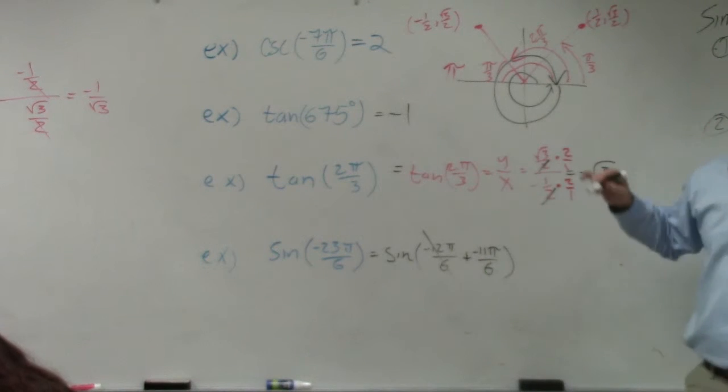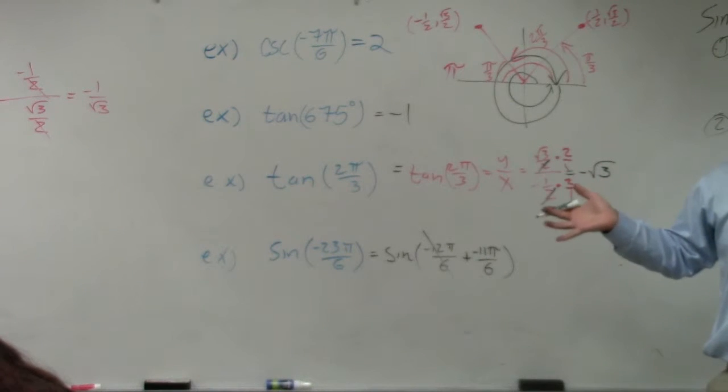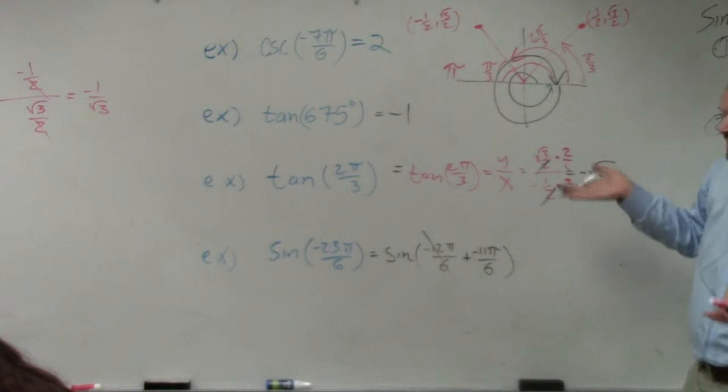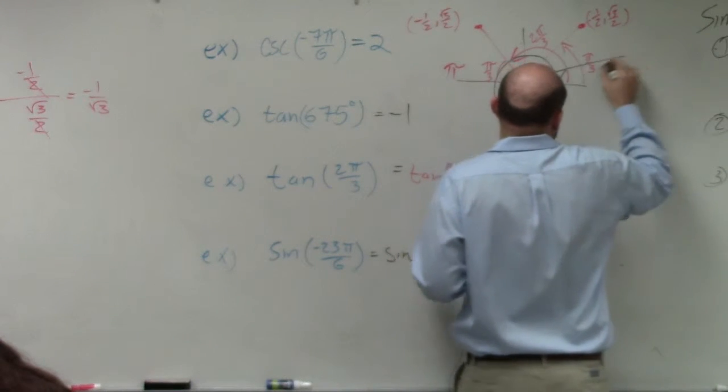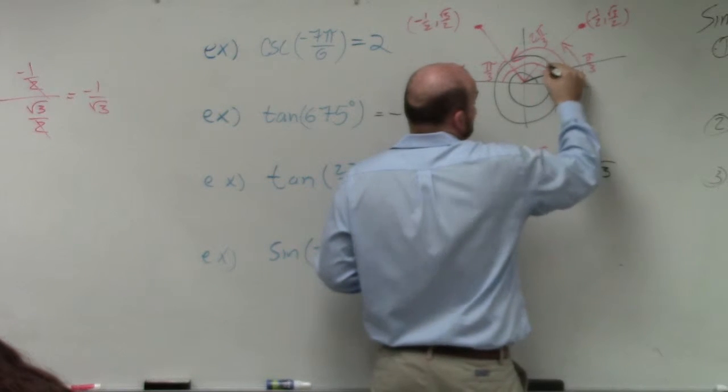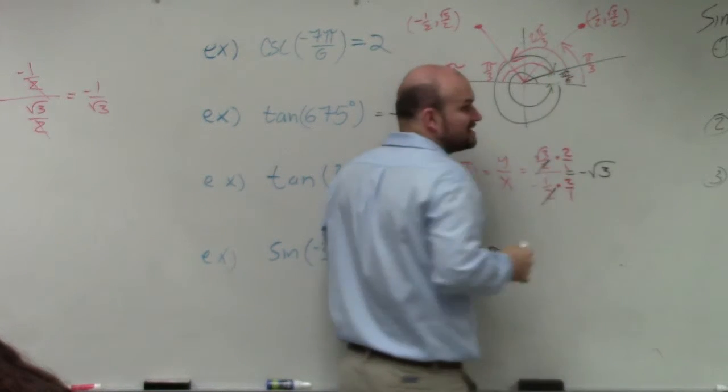Negative 12 pi over 6, right? So if I'm going to negative 11 pi over 6, then I'm just going to shut my angle a little bit short, and my reference angle is pi over 6.